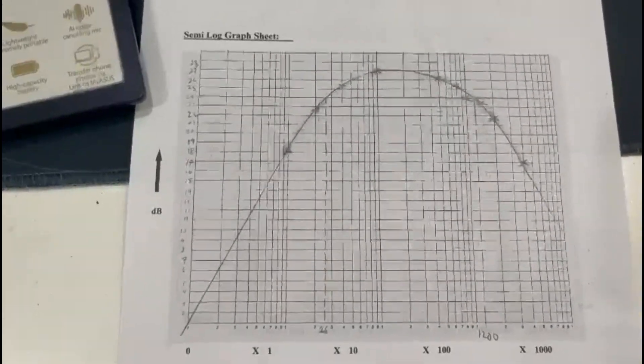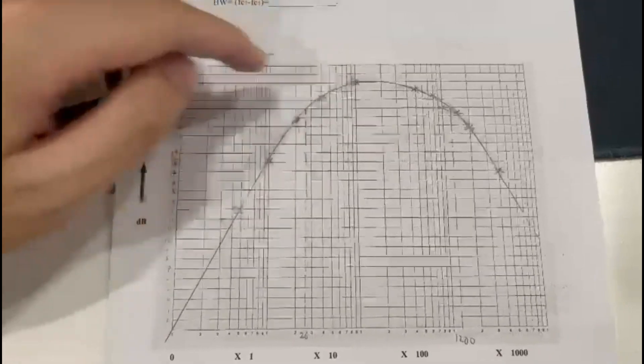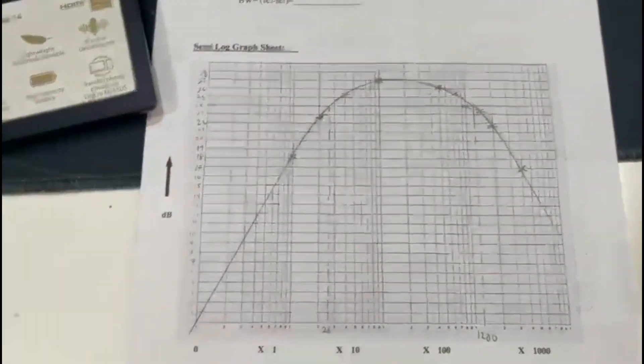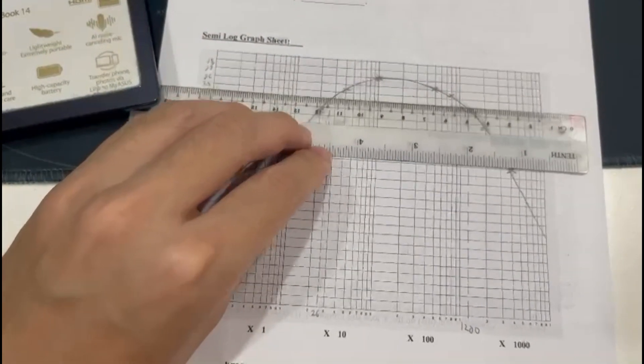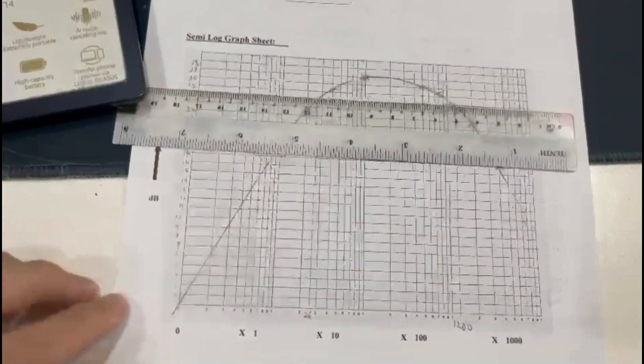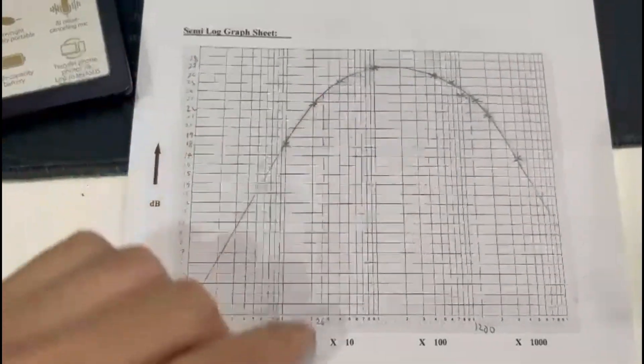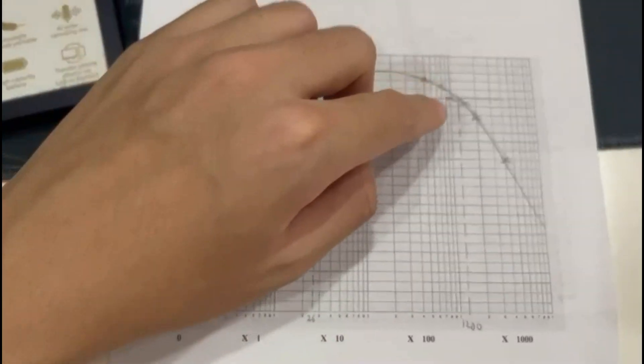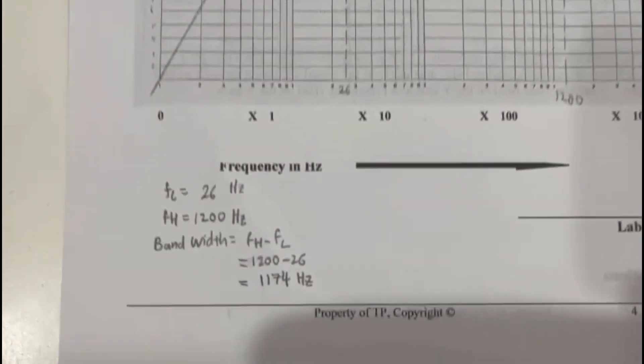Based on the frequency response curve, the negative 3dB line will be 27 minus 3, which gives us 24dB. From this line, we can derive the low frequency to be 26Hz and the high frequency to be 1200Hz. Thus, the bandwidth will be 1200 minus 26, which gives us 1174Hz.